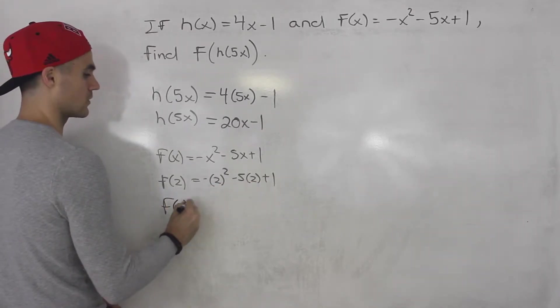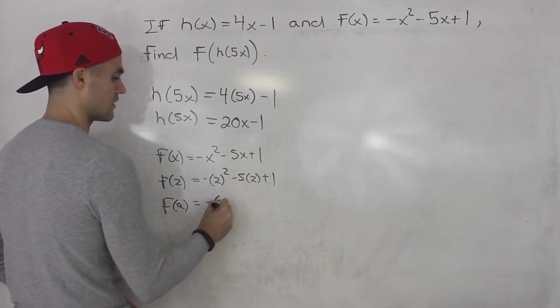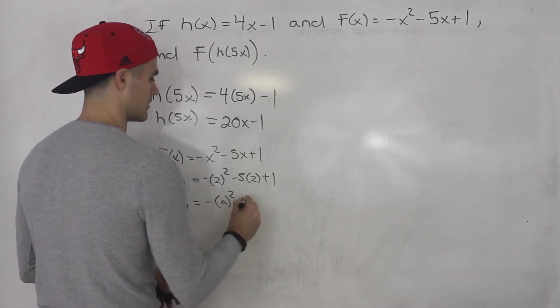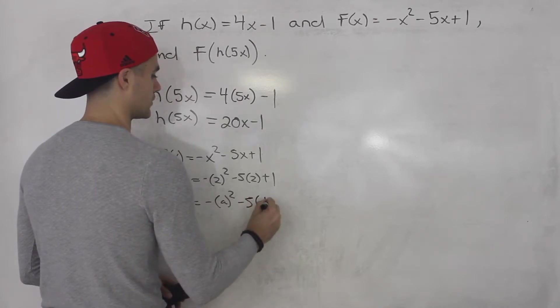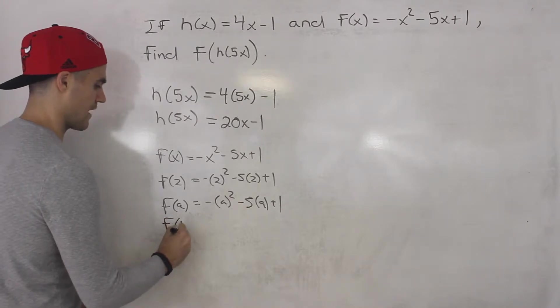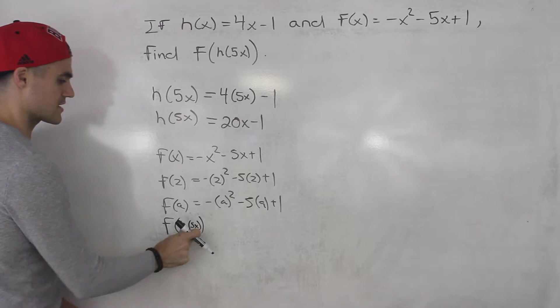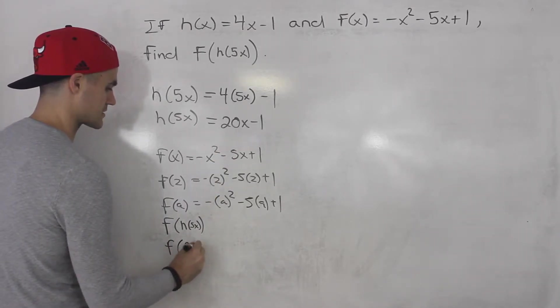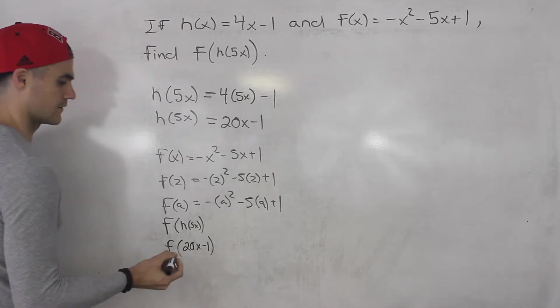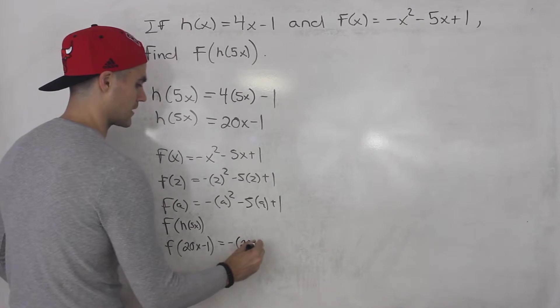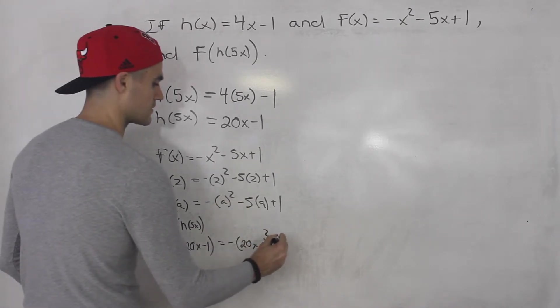What's f(a) going to be? It's going to be -a² - 5 times a + 1. So then following this pattern, what's f(h(5x)) going to be? Well, instead of writing h(5x), we could just write f(20x - 1). So we could plug in 20x - 1 for all of the x values.